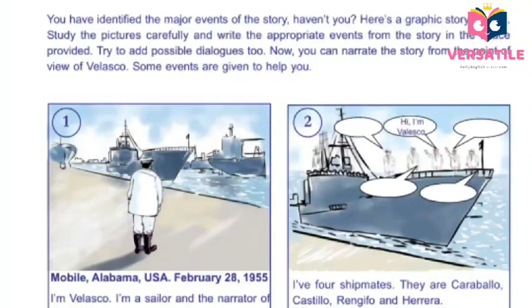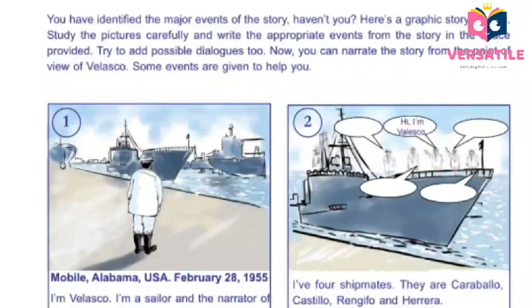Let's go to the next activity — activity number two. You have identified the major events of the story. Here is a graphic story for you. Study the pictures carefully and write the appropriate events from the story in the space provided. Try to add possible dialogues. You can read the story from the point of view of Velasco. Some events are given to help you.